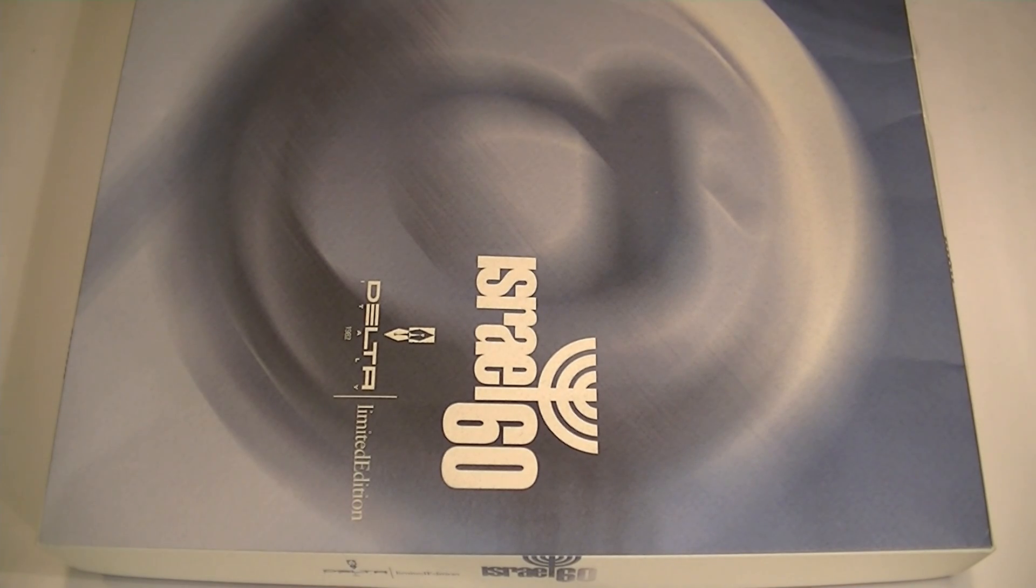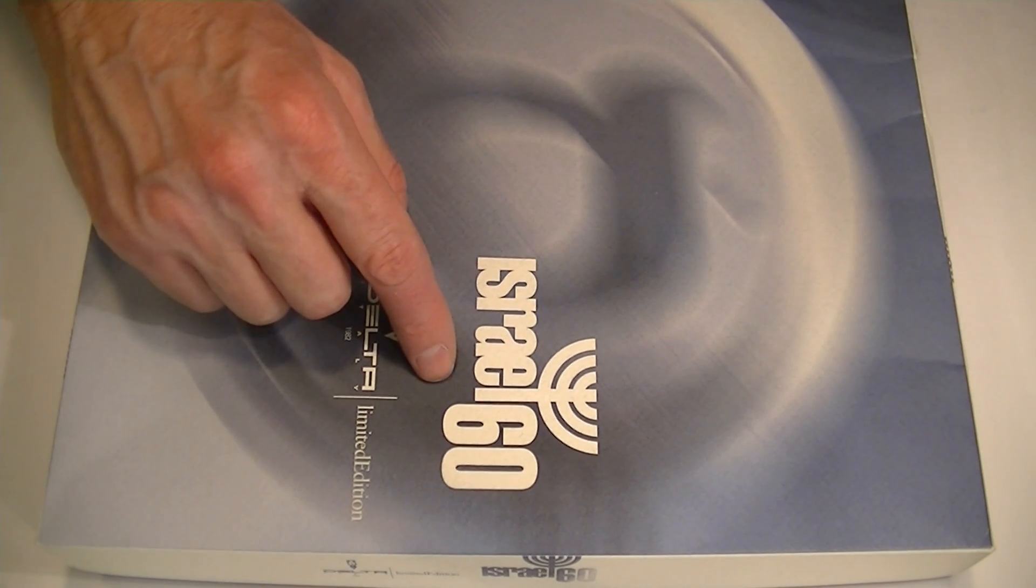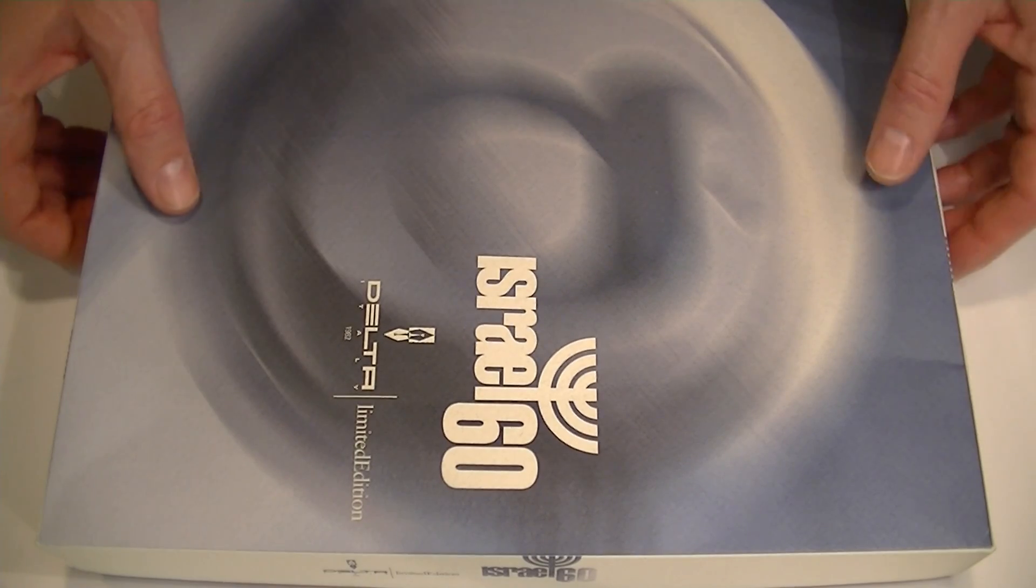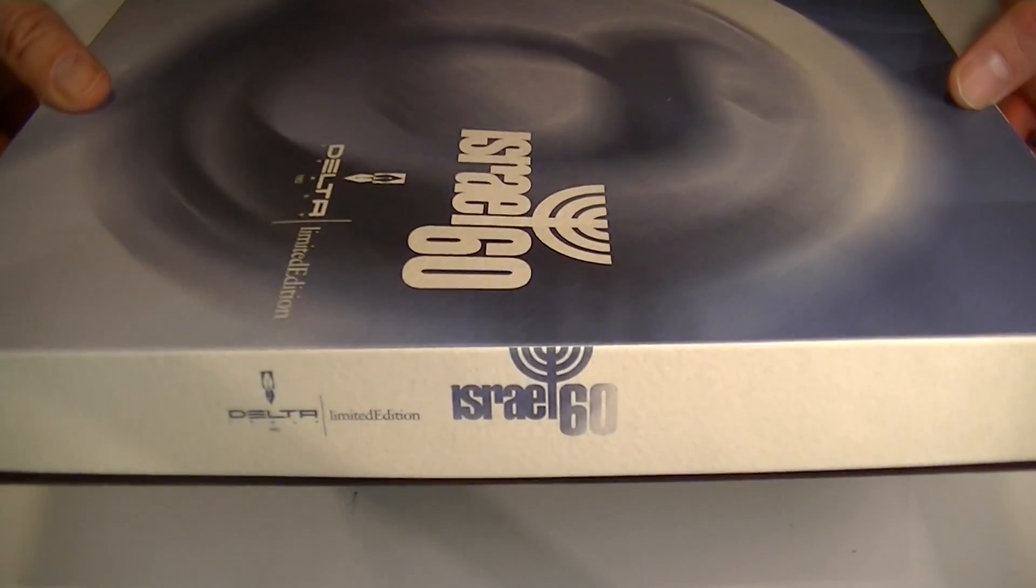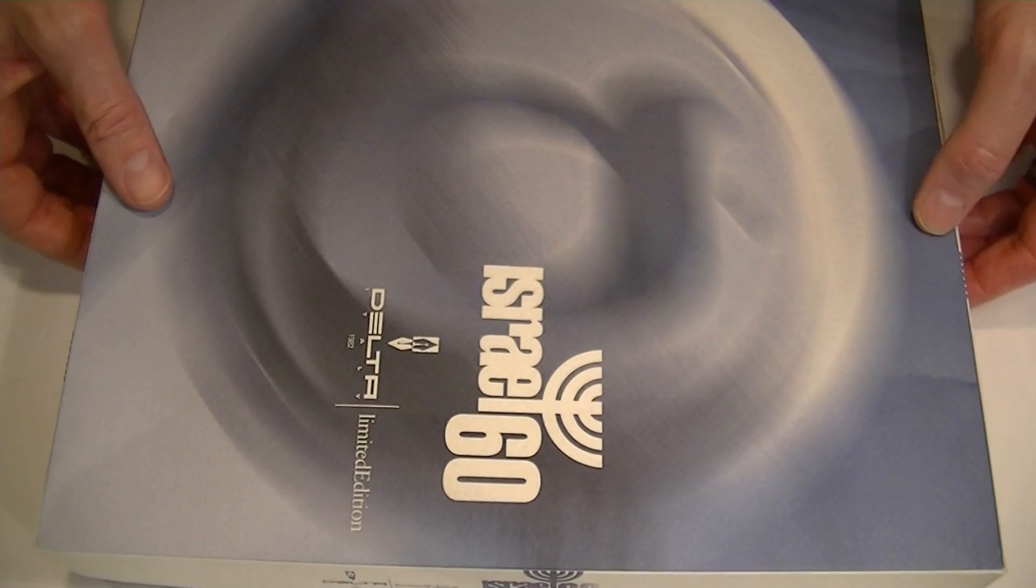This is the Delta Israel 60th Anniversary Limited Edition Fountain Pen. It comes in a large cardboard box. On the top of the box we have the Israel 60th Anniversary logo as well as the Delta logo. We also have those same logos along the sides of the box.